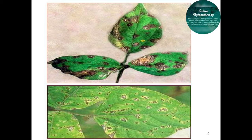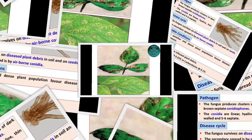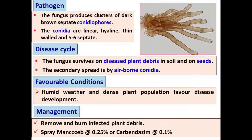In images, you can clearly see the irregular lesions and the circular spot with gray center and reddish-brown margin. This fungal pathogen produces clusters of dark brown septate conidiophores — the structures which bear the conidia. The conidia are linear, hyaline, thin-walled, and 5 to 6 septate. These are the microscopic structures of this pathogen.